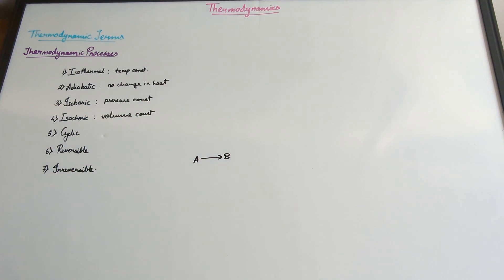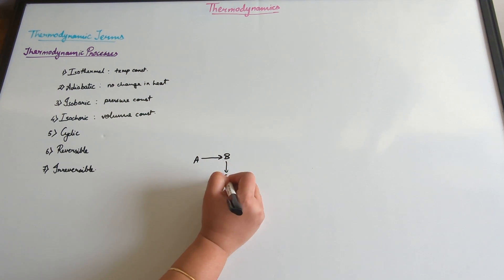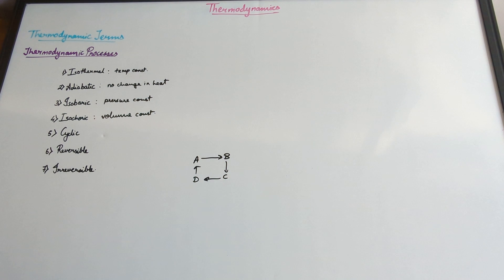So the first four, you have one particular thing staying constant. The next three, fifth one is the cyclic process. So this basically means that you have A could be converted to B, B to C, C to D and D is back to A. So there is a cycle happening.